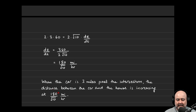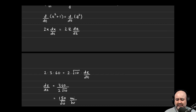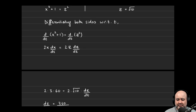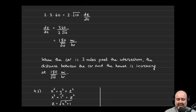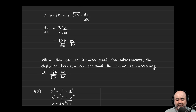At 180 over √10 miles per hour. One important rule: never plug in your constants before you have found the derivative. You must find the derivative and then plug in your constants. If you do it before, your derivatives will vanish, or you won't have the rates that need to be found.